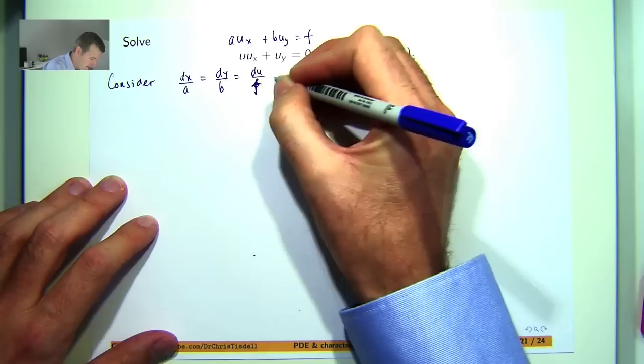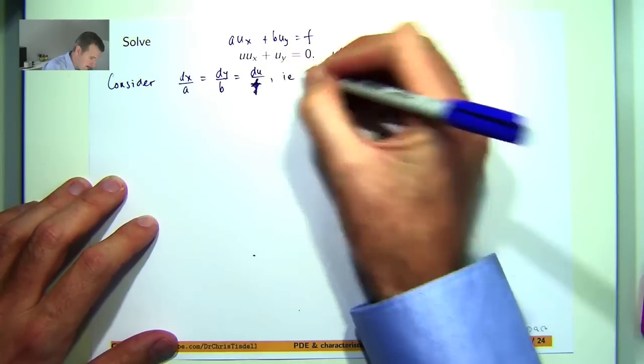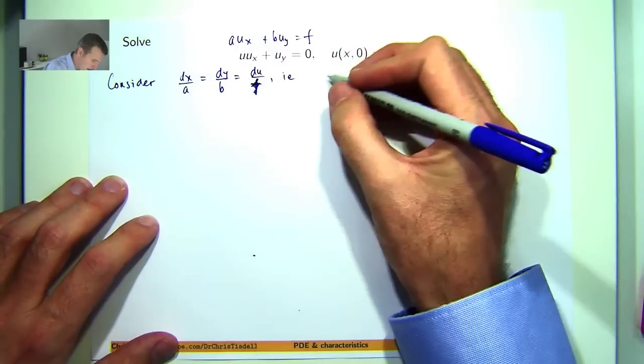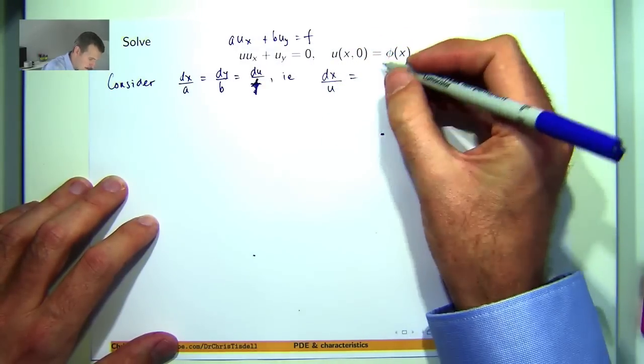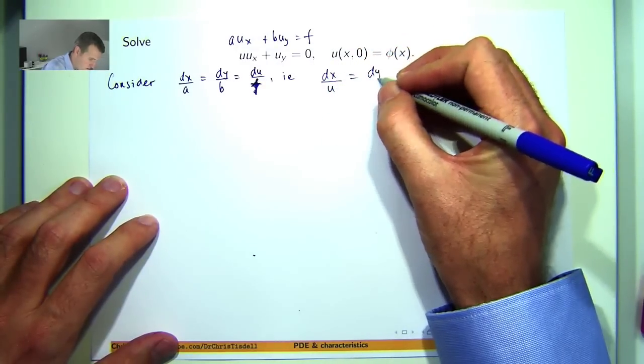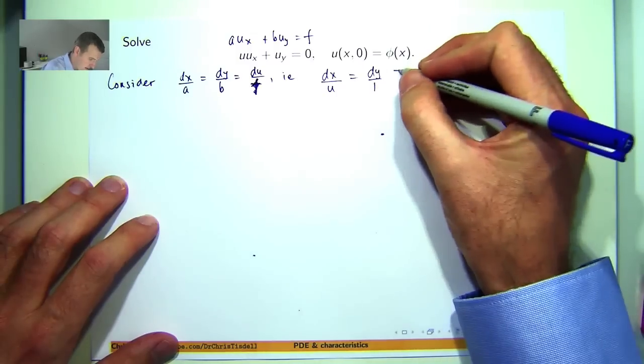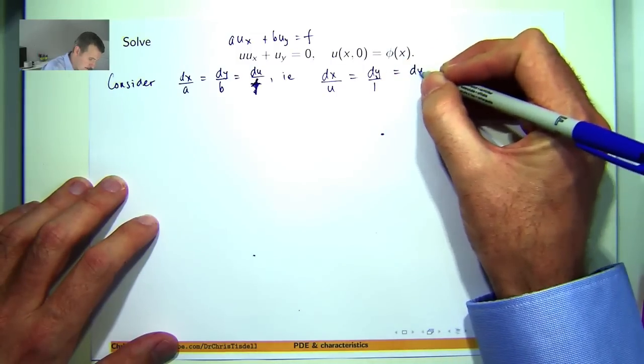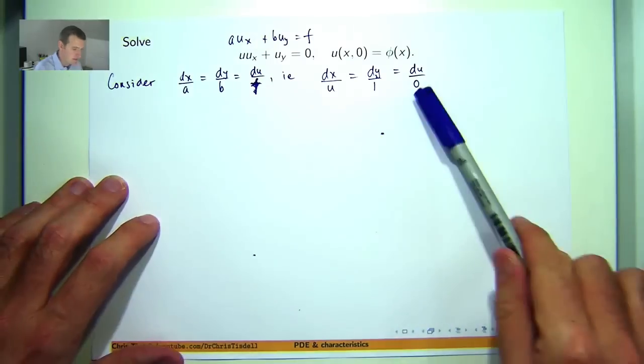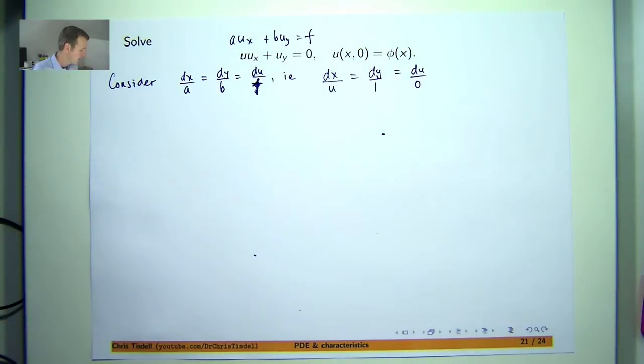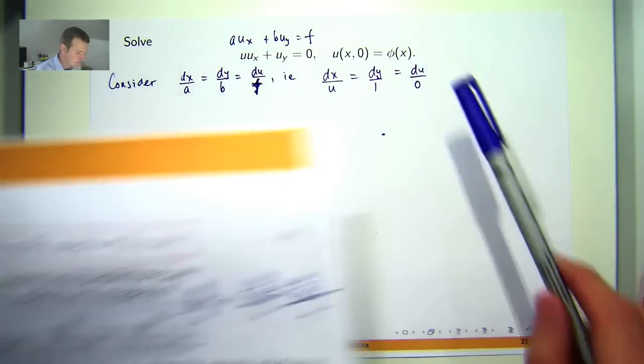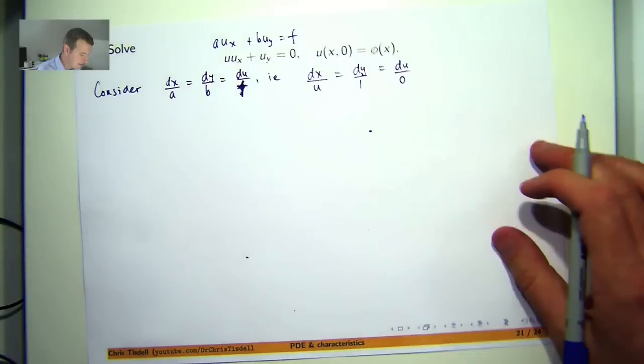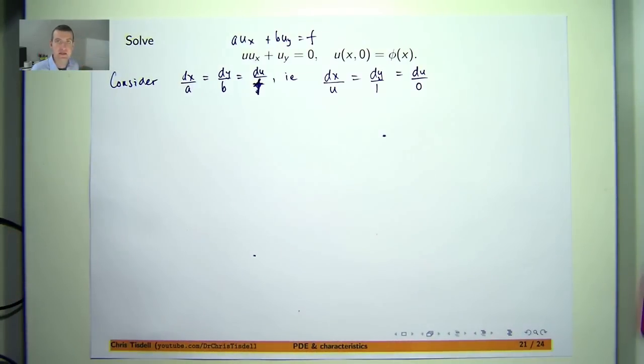So here we're going to have dx over u equals dy over positive 1 equals du over 0. Now this is a bit naughty here. You might think oh you're dividing by 0. But actually what's happening here is that basically from here du dt is just 0.